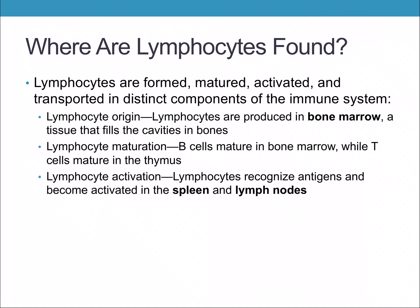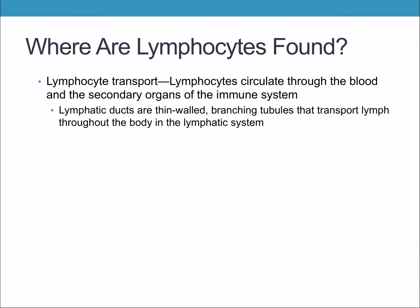Lymphocyte activation: lymphocytes recognize antigens and become activated in the spleen and the lymph nodes — that's where they are sent out to face invaders. Lymphocyte transport: lymphocytes circulate through the blood and the secondary organs of the immune system, such as the spleen, the lymph nodes, and all of the lymph fluid.